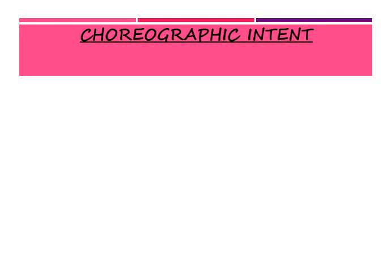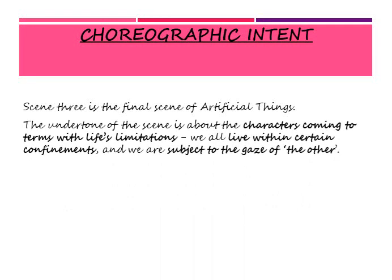Next is the choreographic intent — this is what they intend the audience to be able to see from their work. Scene three is the final scene of Artificial Things, and this is the section we are focusing on primarily. The undertone of the scene is about the characters coming to terms with life's limitations. We all live within certain confinements and we are all subject to the gaze of the other. In this scene it is very obvious that the limitation of the dancers is that they are confined to their wheelchair.